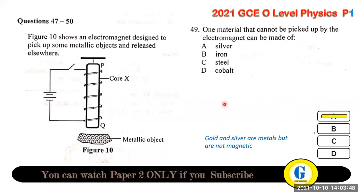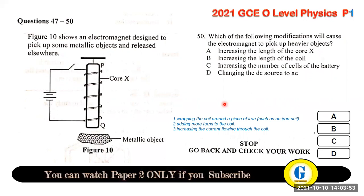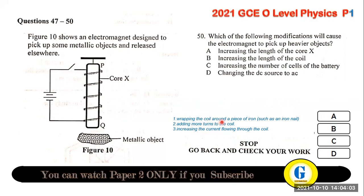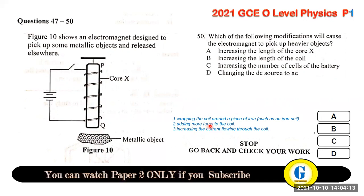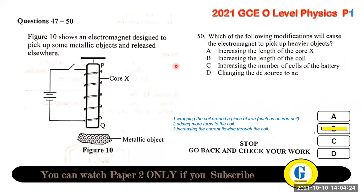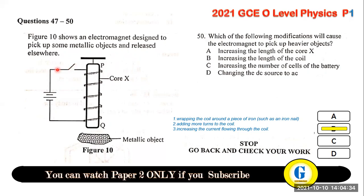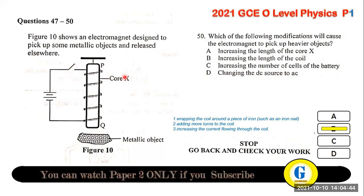Question 50: modifications to make the electromagnet pick up heavier objects include adding more turns to the coil, or increasing the current flowing through the coil. Increasing the number of cells increases voltage but may not significantly change current if resistance is unchanged. Changing DC to AC is incorrect — current must flow in one direction.